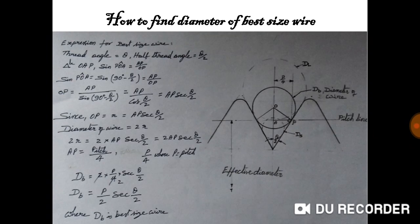In triangle OAP, sin of angle POA equals 90 degrees minus theta by 2, which equals AP by OP. Therefore OP equals AP by cos(theta/2), which gives OP equals AP × sec(theta/2). Since best size wire equals DB equals diameter of wire equals 2R and OP equals R, the diameter of wire equals AP × sec(theta/2), where AP equals P by 4 and P is the pitch. Therefore best size wire equals (P/2) × sec(theta/2), where DB is the best size wire to be used for measurement of effective diameter of the screw thread.